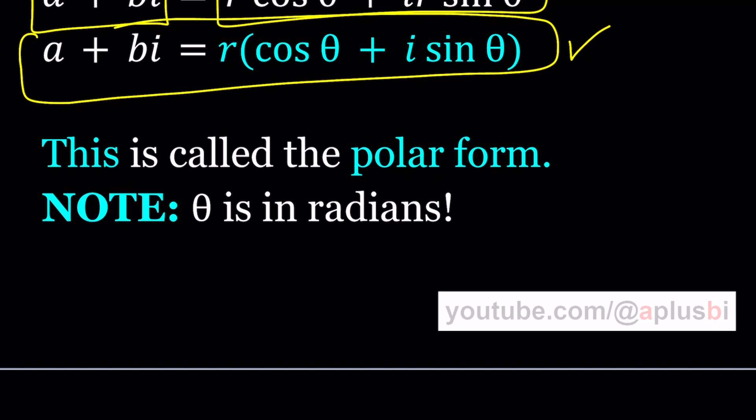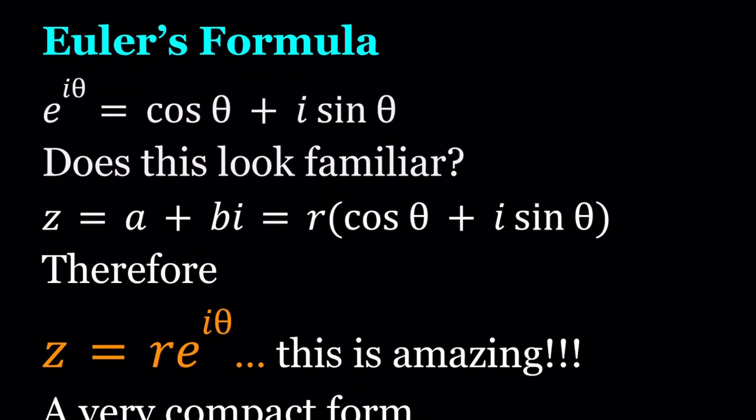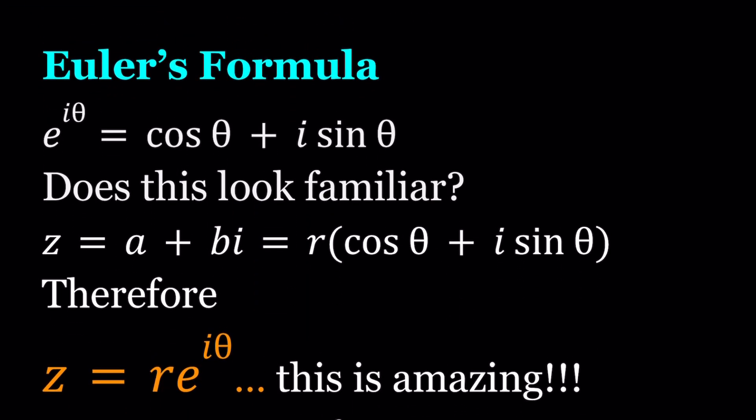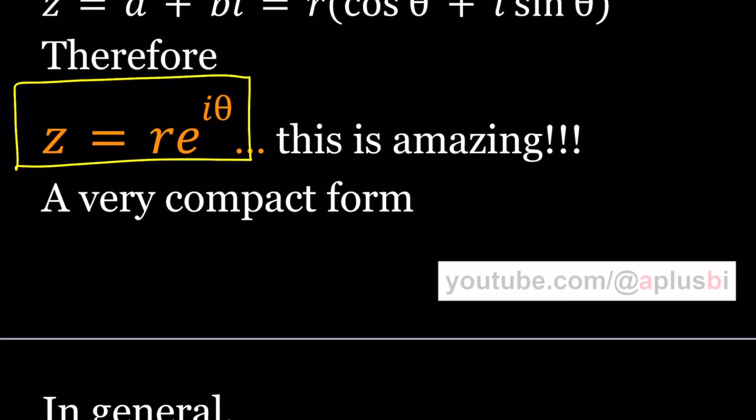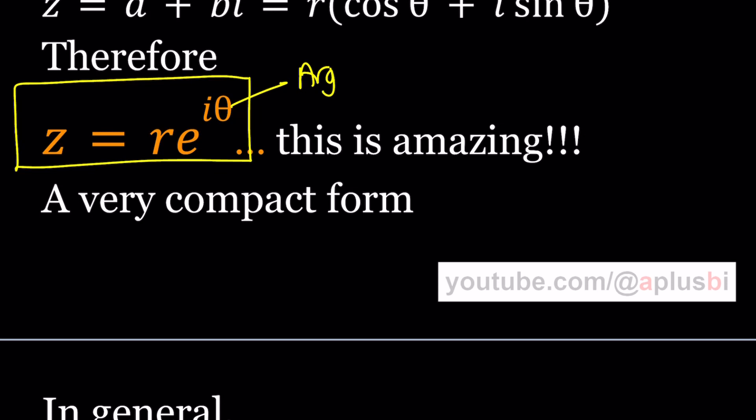Euler's formula is exactly what that is. e to the i theta is cosine theta plus i sine theta, which is something that you can prove using Taylor series. This gives us a nice expression for z which is super compact. z can be written as r times e to the i theta, where theta is the argument and r is the modulus.